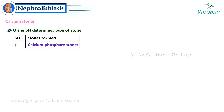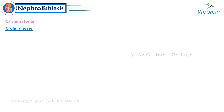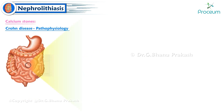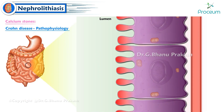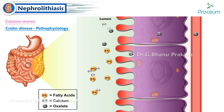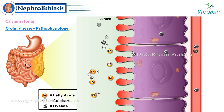Increased urine pH leads to the formation of calcium phosphate stones; decreased pH leads to calcium oxalate stones. Patients with Crohn's disease have an increased risk of calcium oxalate stones because inflammation of the small bowel increases reabsorption of oxalate. Crohn's disease causes inflammation that impairs fat absorption; increased fat binds calcium, leaving free oxalate to be absorbed and deposited in the kidney.